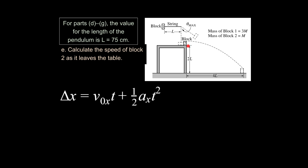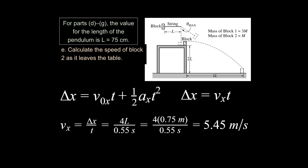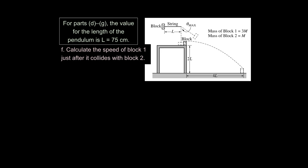Part E asks for the speed of block 2 as it leaves the table. In the x-direction, acceleration is zero — no air resistance — so the x-velocity term simplifies to v_x = Δx / t. Plugging in the horizontal distance traveled and the time from part D, we get a speed of 5.45 meters per second.